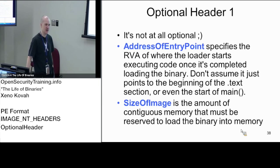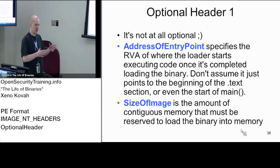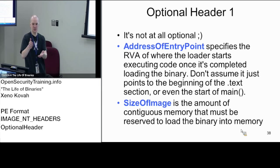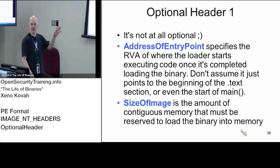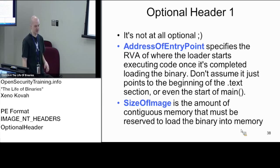Size of image is the total size of the file once it's mapped into memory — basically everything from disk that gets mapped into memory. The OS loader needs to know how much space to allocate. For convenience, you have this size of image field where the OS loader looks at it, allocates that much space, and then maps the pieces into that space appropriately.